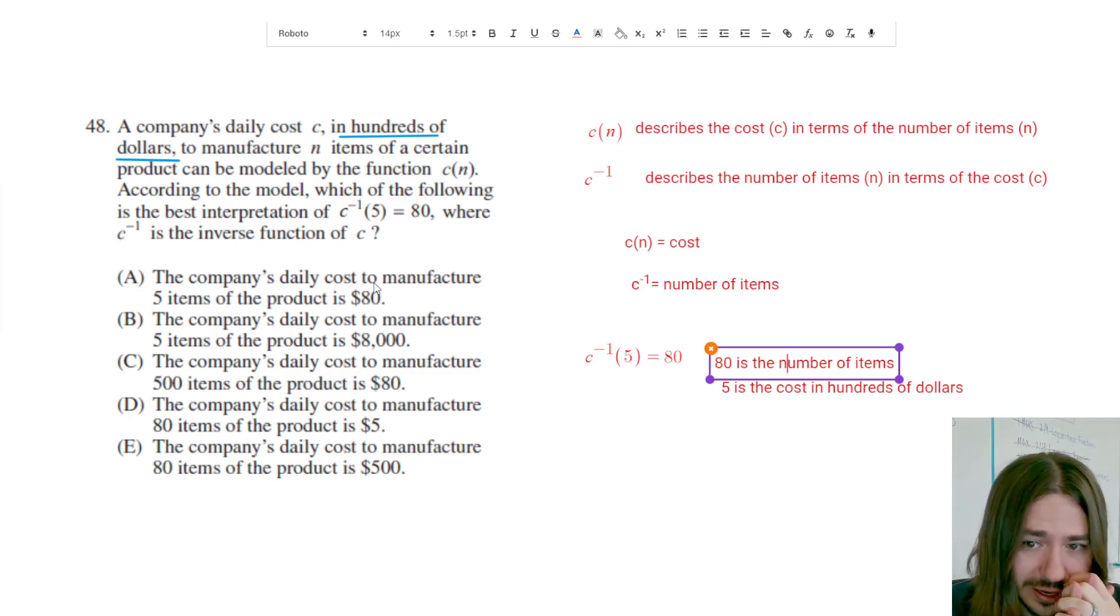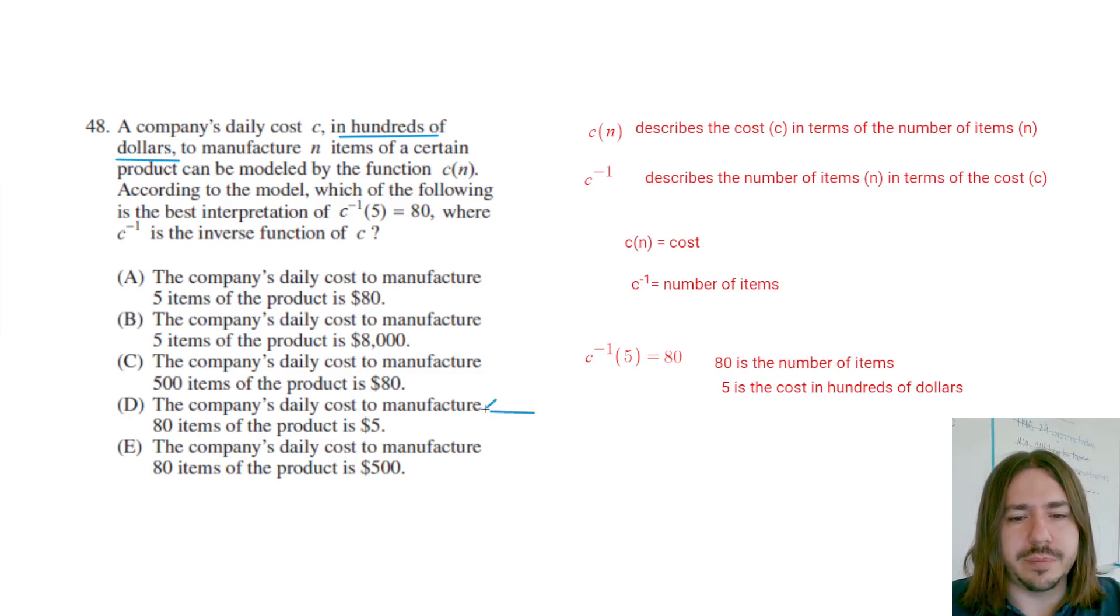D says the company's daily cost to manufacture 80 items of the product is five dollars. This is probably the most commonly picked item that's wrong, and that's because it's easy to miss the fact that the cost is in hundreds of dollars.